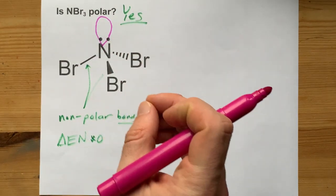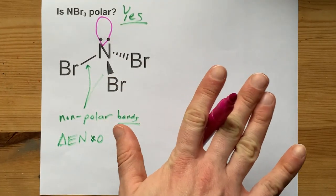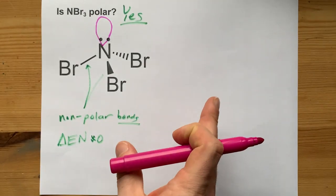A polar molecule has to have a symmetric distribution of electron density. Any asymmetry means that the molecule has some amount of polarity.